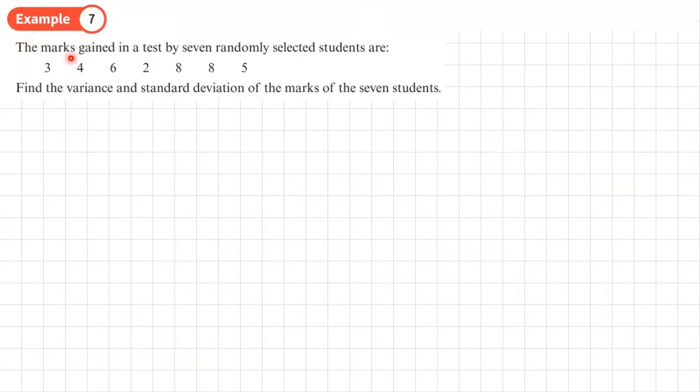Example 7. The marks gained in the test by seven randomly selected students are 3, 4, 6, 2, 8, 8, and 5. Find the variance and standard deviation of the marks of the seven students.